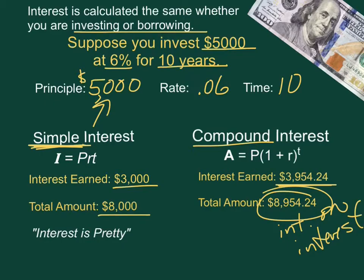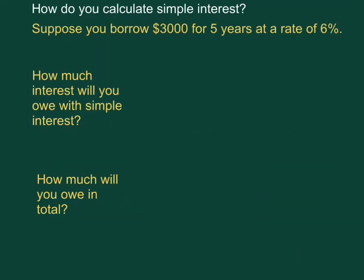You can remember the simple interest formula by interest is pretty. I equals PRT. To calculate simple interest you need the formula I equals PRT. The principal in this case is the $3,000. The time is five years and the rate is .06. Remember to change it to a decimal. Now you just multiply these together.